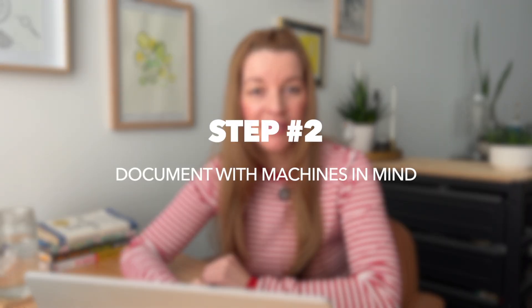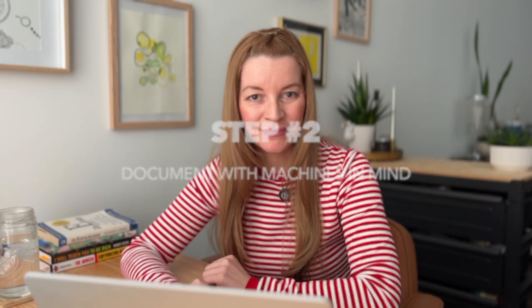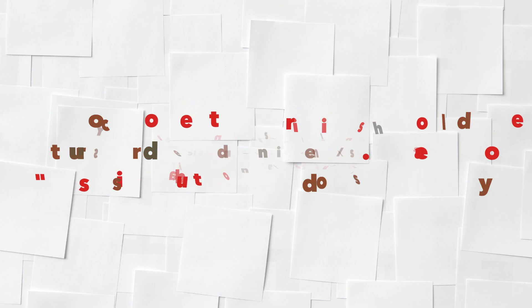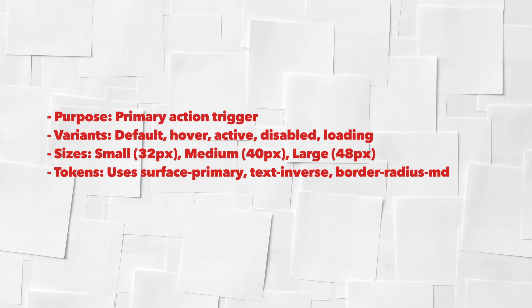Step two: document with machines in mind. Your component descriptions should be structured and consistent. Instead of 'this is a button that does stuff,' you should say — Purpose: primary action trigger. Variants: default, hover, active, disabled, loading. Sizes: small 32px, medium 40px, large 48px. Tokens: uses surface-primary, text-inverse, border-radius-MD.